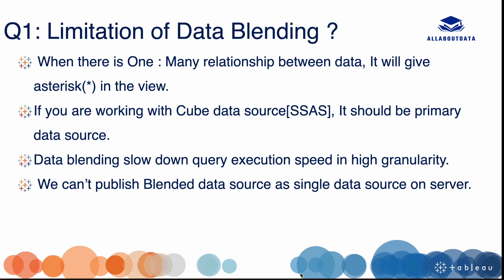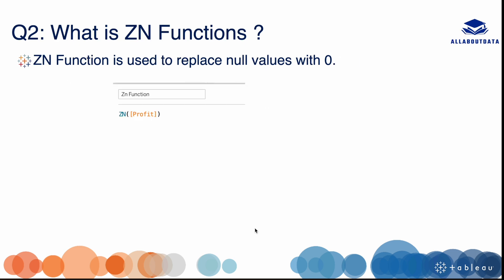Our next question is: what is the ZN function? The ZN function is used to replace null values with zero. It will return the expression value if there is no null value present in the data. The syntax is ZN and then we give our measure name. One important thing: we can use the ZN function only with measures.